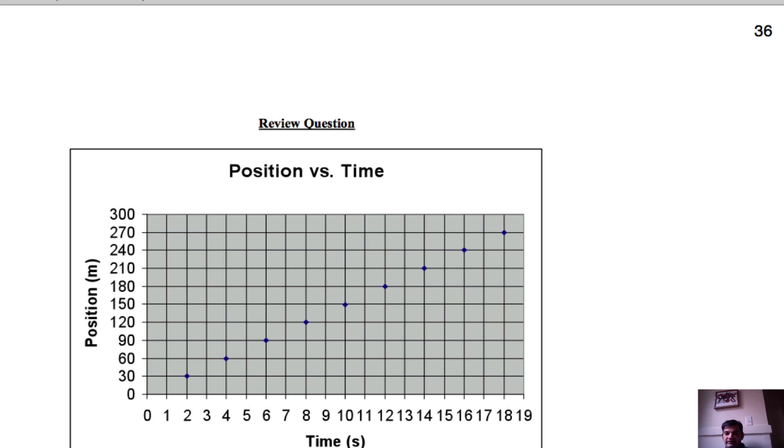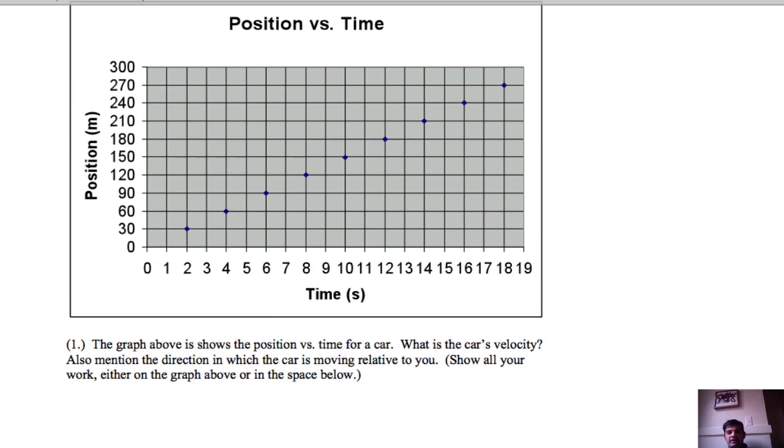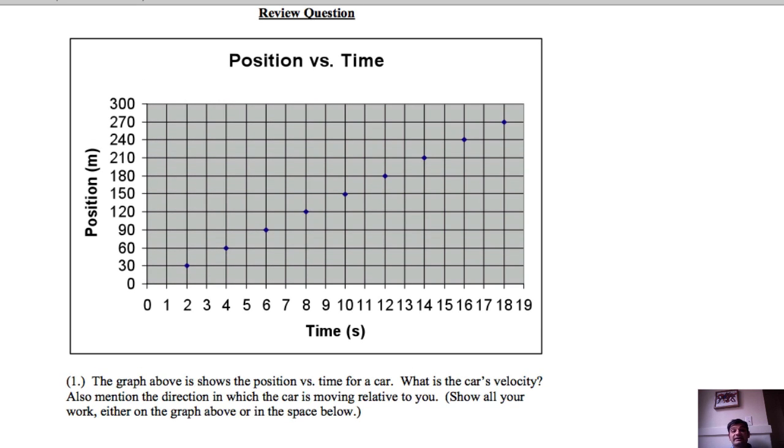All right. Position versus time graph. So we want to, what is the car's velocity? What direction is it moving? I'll tell you right now. This review question, you should know how to do this by now. But if you're the one person that hasn't been awake during class, let's do rise over run to get the slope. So look at this. We got 1, 2, 3, 4 seconds here. And let's get the rise here. So that's 150 and that's 90. So that's 60. So it looks like if we get rise over run, we're going to get V0 is 15 meters per second. And it looks like it's moving away from us because the slope is positive. It's just beautiful.